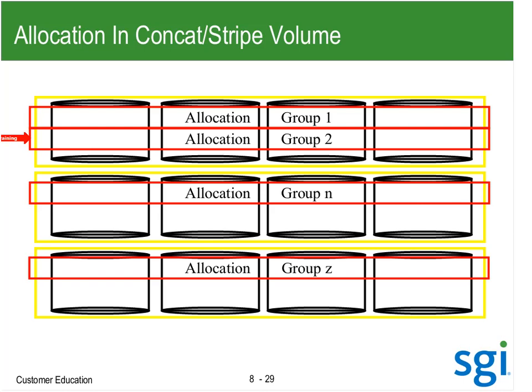I had a site that had a problem because their allocation group count was so large that it took a day to rotate from one concat to the next. That's where skip AG can come in — I could have a lot of AGs but rotate through them quicker. I want the skip to be odd. That way when I rotate around I don't come back to the same allocation group immediately — I get a scatter rotation and interleave pattern.